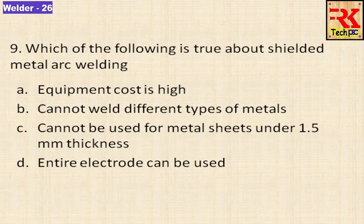Which of the following is true about shielded metal arc welding? Options are: equipment cost is high, cannot weld different types of metals, cannot be used for metal sheets under 1.5 mm thickness, or the entire electrode can be used.